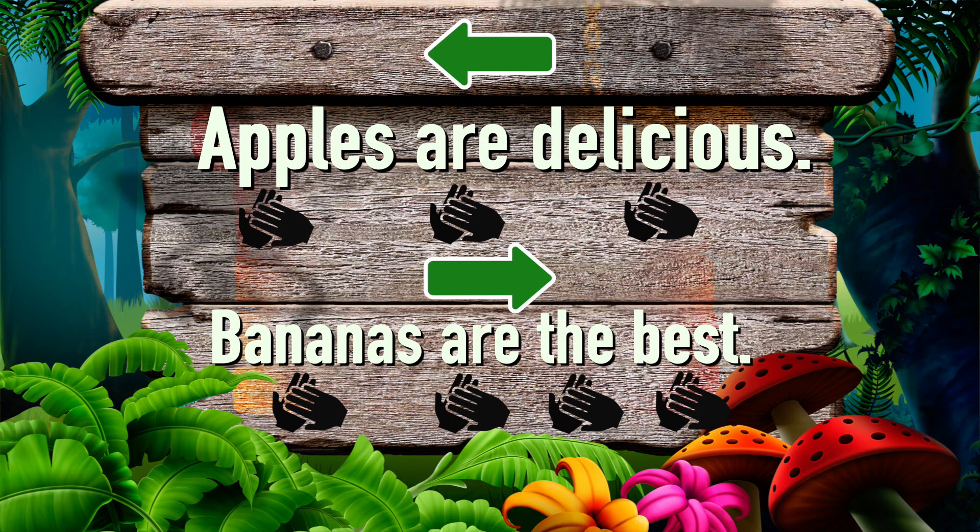Remember, Oli wants me to go the way that has three words. Which sentence has three words? You got it — the top one. Oli is telling me to go left.